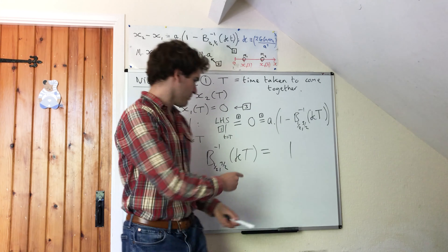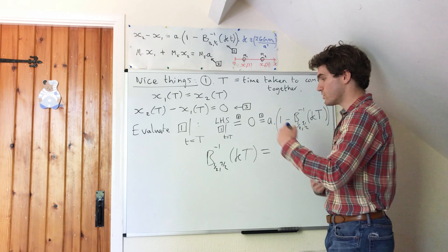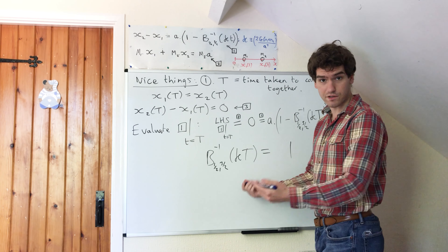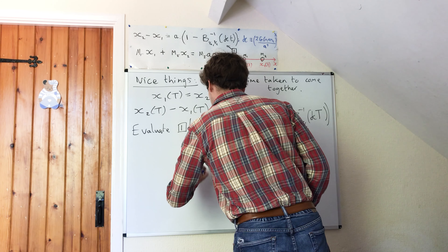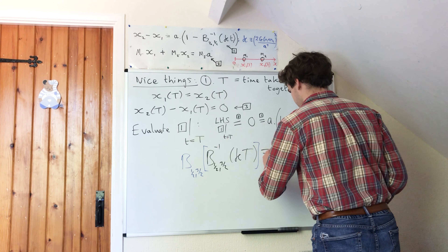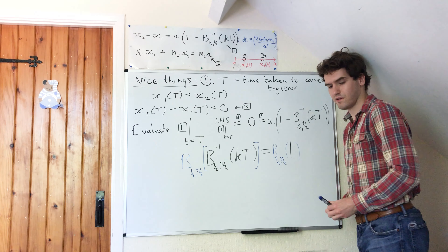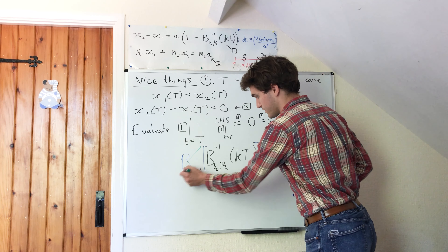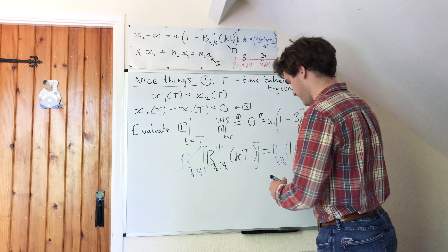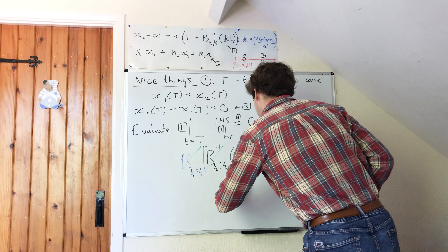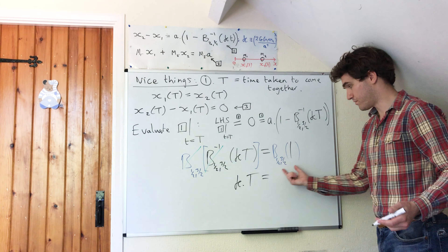We've got big T inside the argument of the inverse incomplete beta function, so in order to solve this we need to undo this inverse function. To do this we're going to take the incomplete beta function of both sides, specifically the half three over two version. By the rule of inverse functions — and this is actually the way I define the inverse incomplete beta function — these cancel off, and we're left with kappa times big T equal to the incomplete beta function, half three over two, of one.